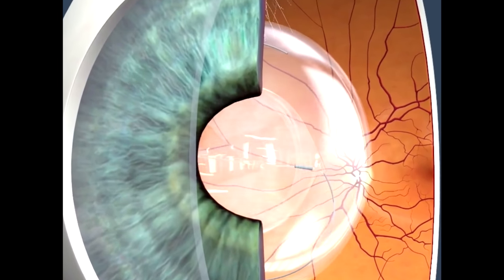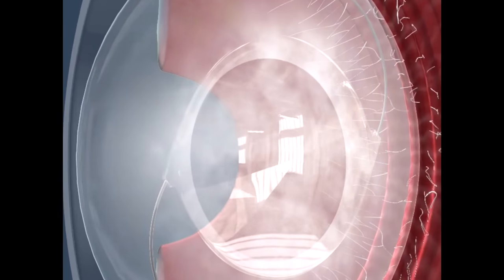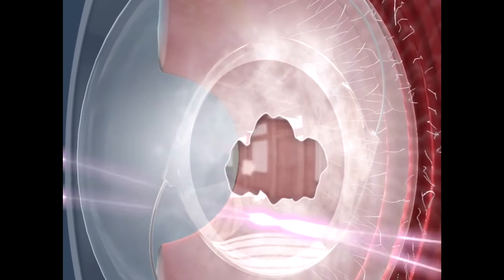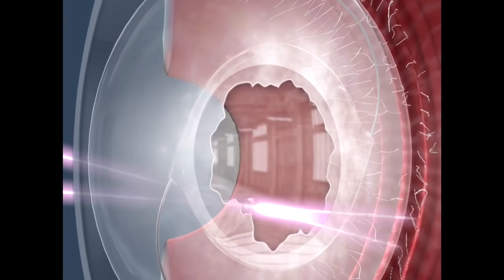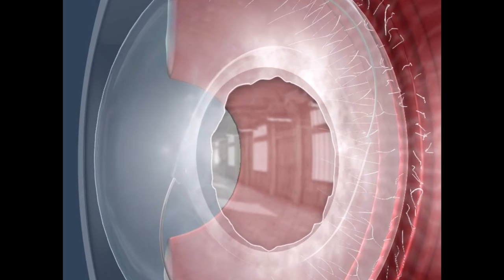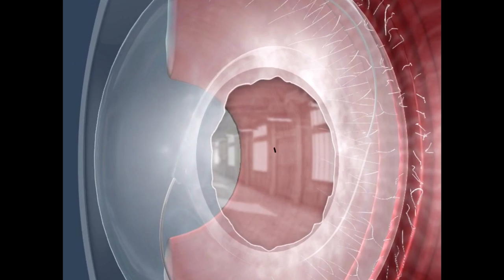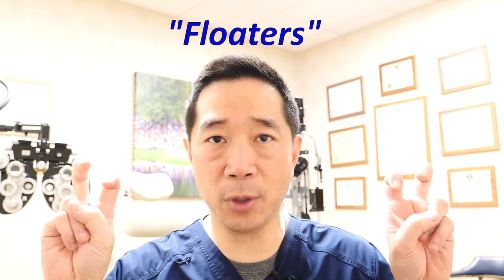YAG capsulotomy is super simple. We use what we call a YAG laser, and the laser is focused onto the posterior capsule. The capsule is opened in a treatment that takes generally about 15 seconds, and then the vision clears up usually within less than a day. It's very safe. The main risk is that because we're using a laser to break up the capsule, small fragments of the capsule might float behind the implant.